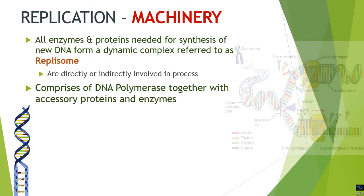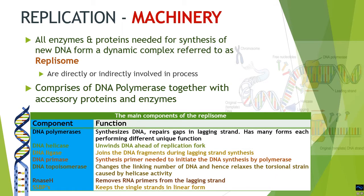Discussing the machinery of replication — as you already know, all of the enzymes and proteins which are needed for the replication process are together called the replisome. This makes a dynamic complex in the cell and they are directly or indirectly involved in the process. The table gives you a description of the different types of enzymes which are essential for the replication process and make the machinery of replication viable.